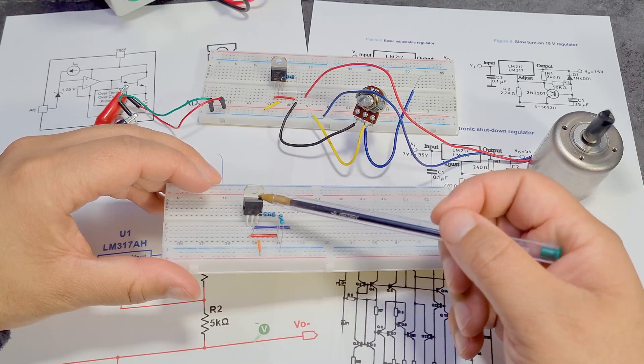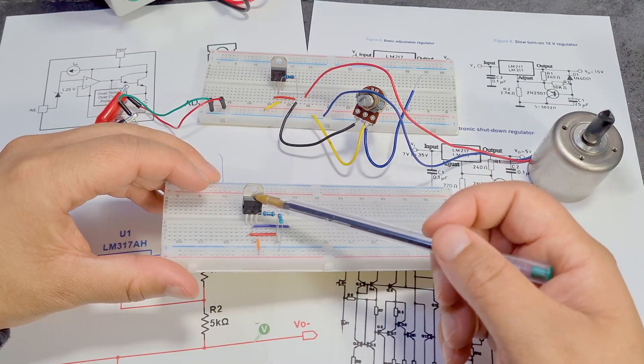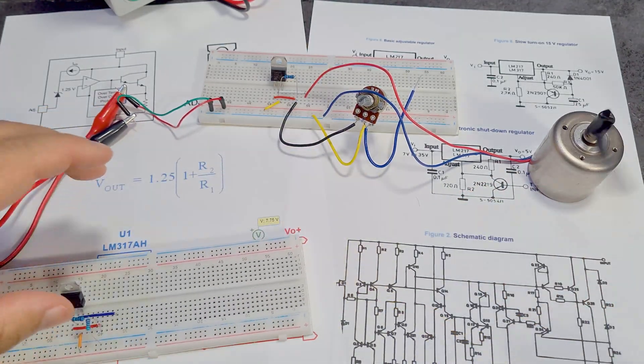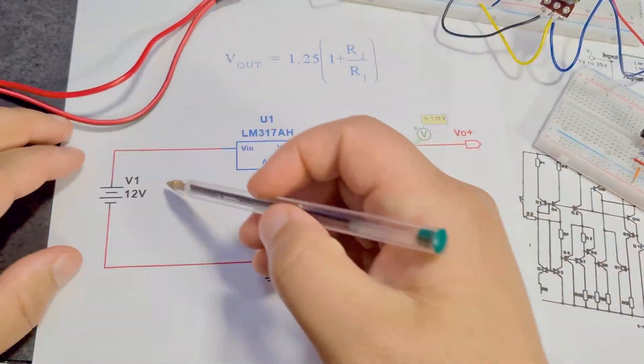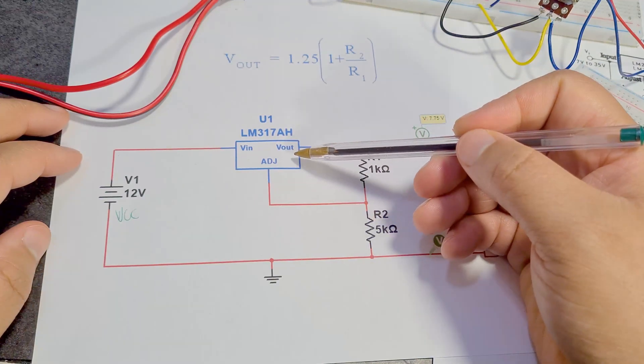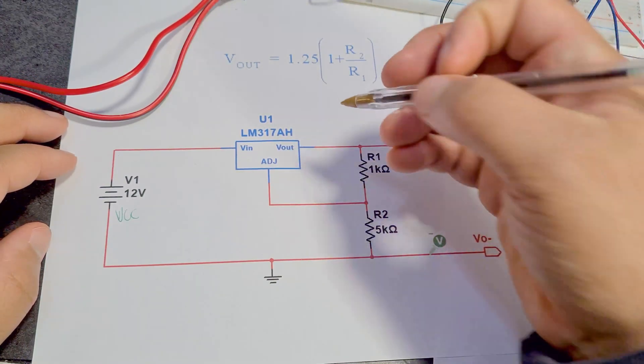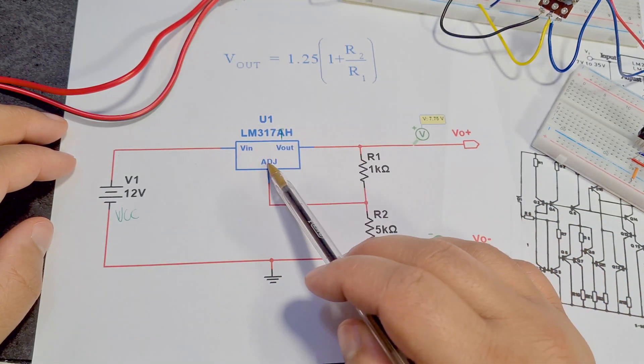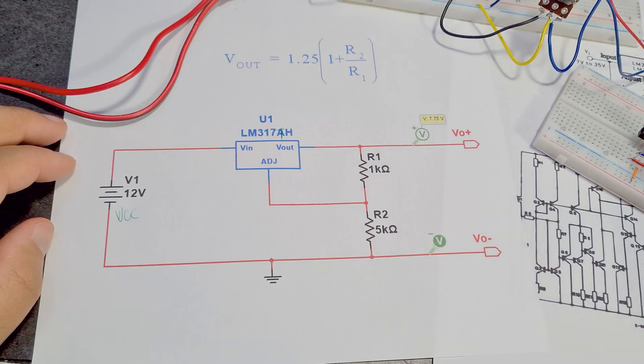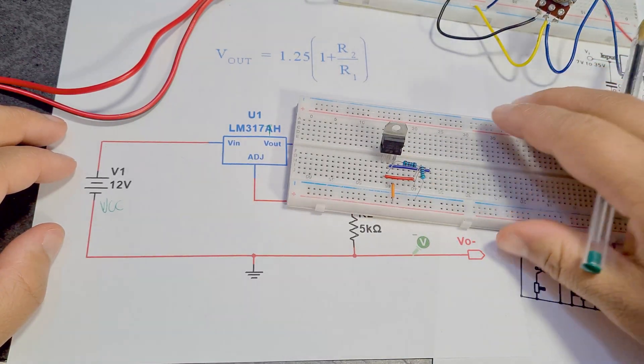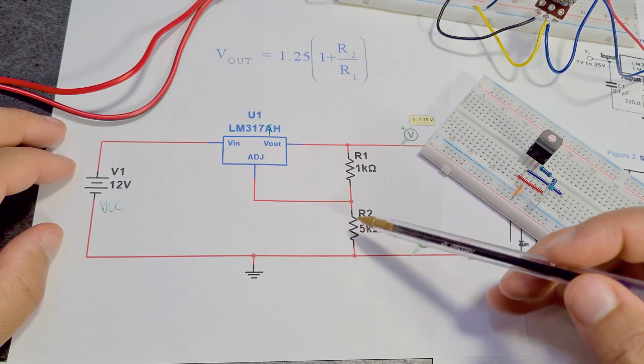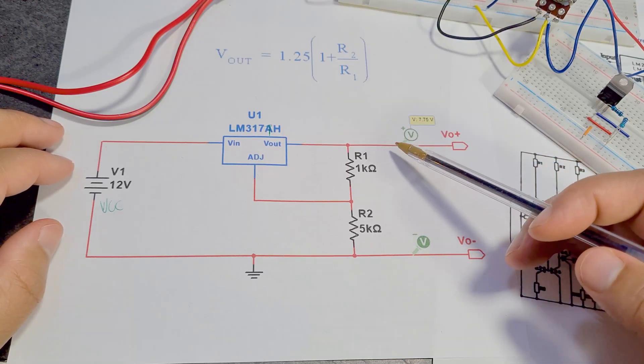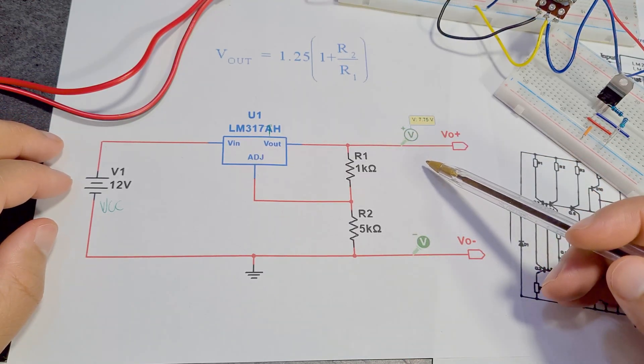But yeah, so in this one now we're going to be covering adjustable ones which means that we can basically change the output voltage that we're getting using just the IC. And you can see that my motor on the output here is changing speed as I change the resistance. So here I've got a potentiometer, here I've just got two fixed resistors and then this will give me a specific voltage output or a custom voltage output that I've designed.